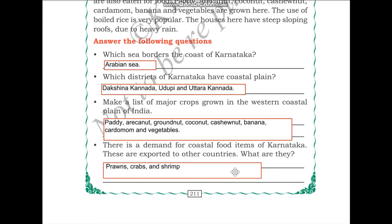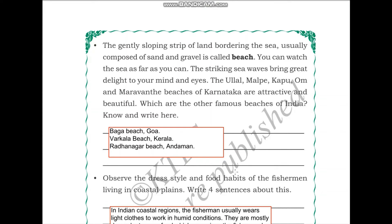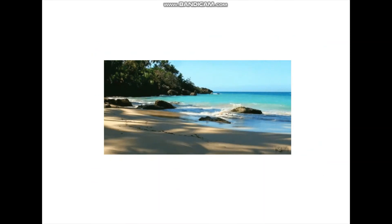The gently sloping strip of land between the sea, usually composed of sand and gravel, is called a beach. The Ullal, Malpe, Kapu, Om, and Maravante beaches of Karnataka are attractive and beautiful. Some other famous beaches of India include Baga Beach in Goa, Varkala Beach of Kerala, and Radhanagar Beach in Andaman. You can add more to this list. Here is an image of what a beautiful beach looks like — very peaceful and calming for the mind.